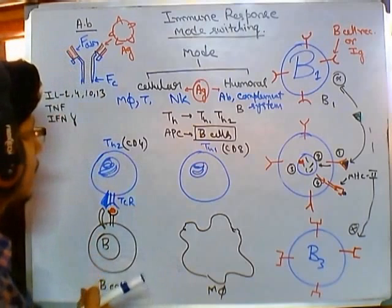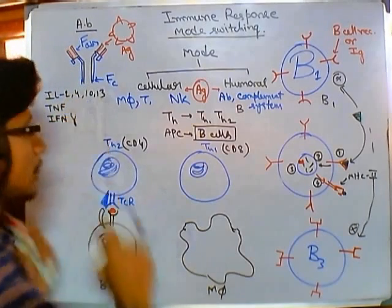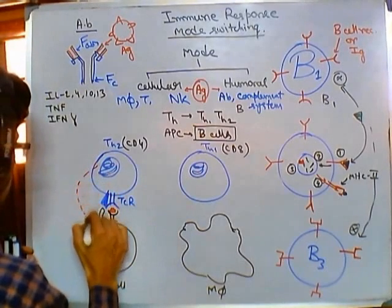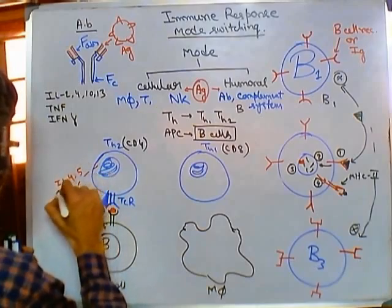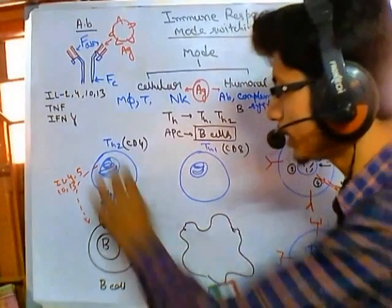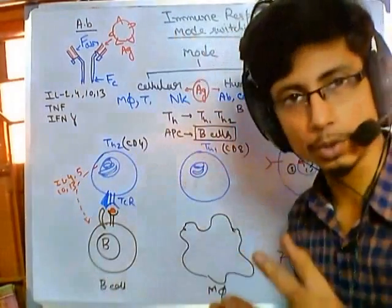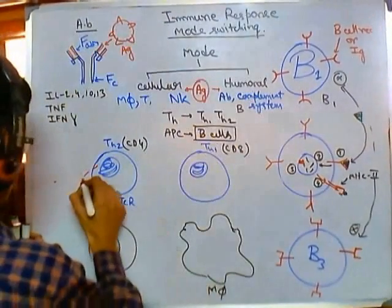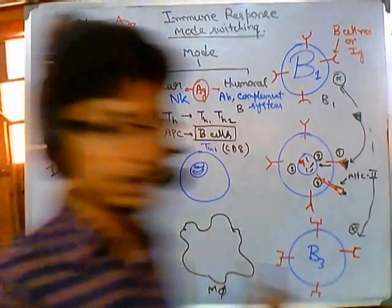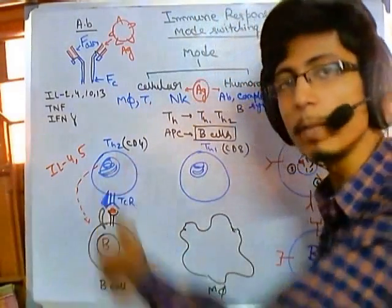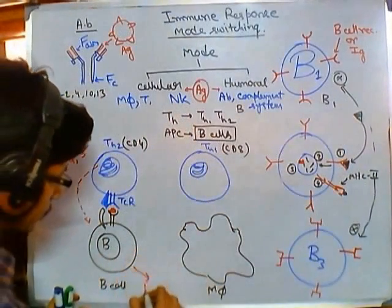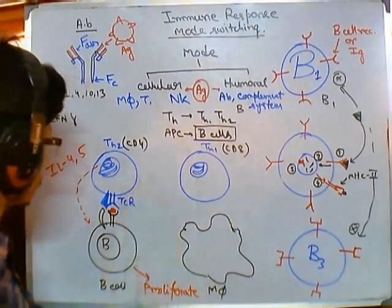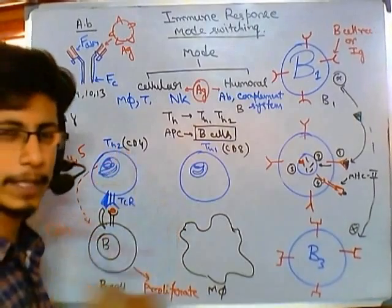Due to all these interactions, the Th2 cell becomes activated. Once activated, it starts to secrete chemical mediators — specifically interleukins IL-4, IL-5, IL-10, and IL-13. Remember these names. IL-4 and IL-5 are going to tell the B cell to become mature and to proliferate. The B cells start to proliferate and the immune system takes the humoral mode.